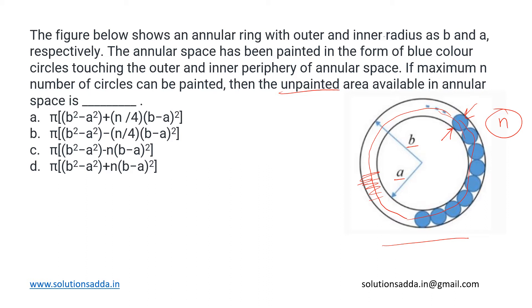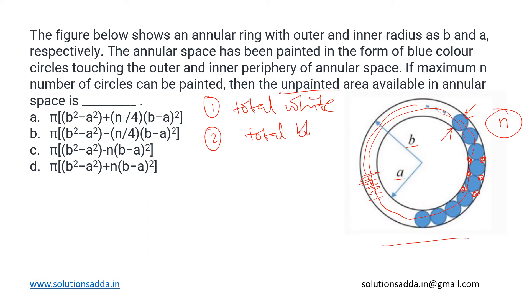We need to find out the leftover unpainted area — the white spaces at the corners that will be left out. The approach is to first find the total white area that has to be painted, and then from that subtract the total blue area, which is the painted area. That will give us the answer.